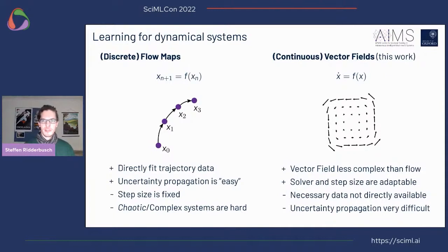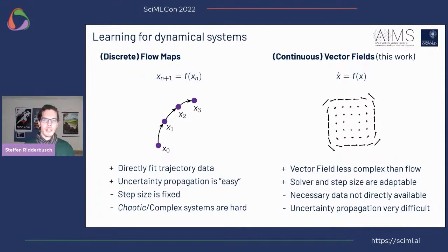Instead, let's consider continuous vector fields. We have a function that, given a state, returns the gradient at that location. Usually for most ODEs, the vector field is a lot less complex than the flow you get when solving it. And if you have the vector field, you can choose the step size and solver freely, which is quite valuable given the wide array of solvers in the DiffEq ecosystem. Unfortunately, the data to learn these models is not directly available since we usually don't have gradient observations — we only have trajectories — and uncertainty propagation through an arbitrary solver is very difficult.